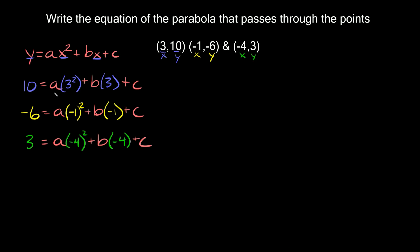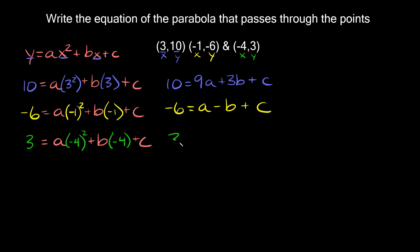Now let's simplify by multiplying out. First equation: 10 = 9a + 3b + c. Second equation: negative 6 = a - b + c, since (-1)² = 1. Third equation: 3 = 16a - 4b + c, since (-4)² = 16. So we have 3 equations and 3 unknown variables: a, b, and c.